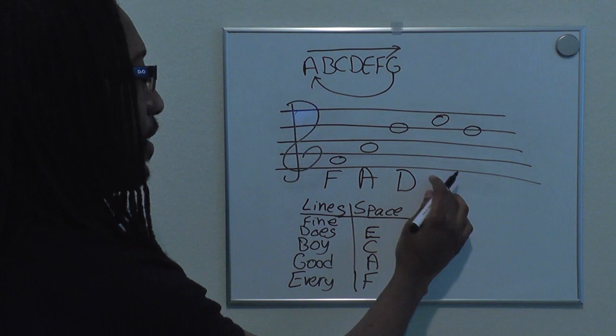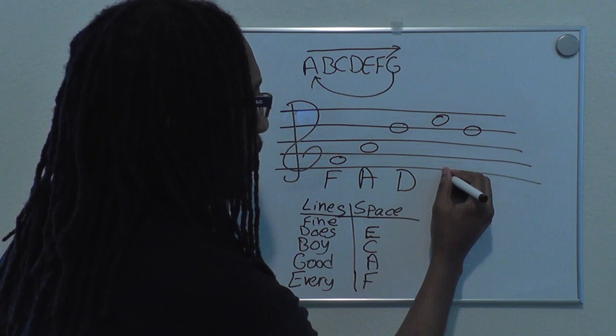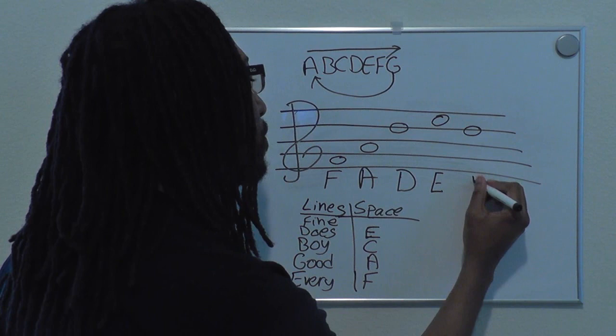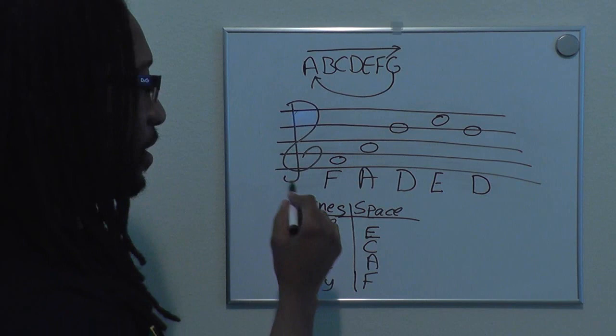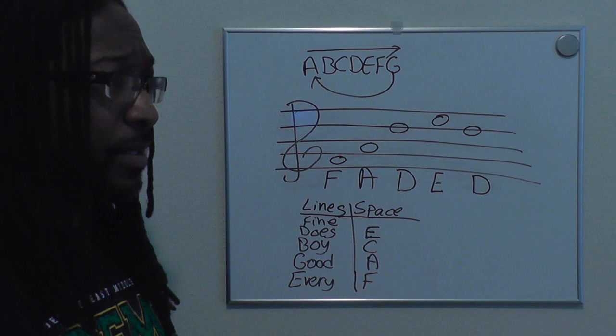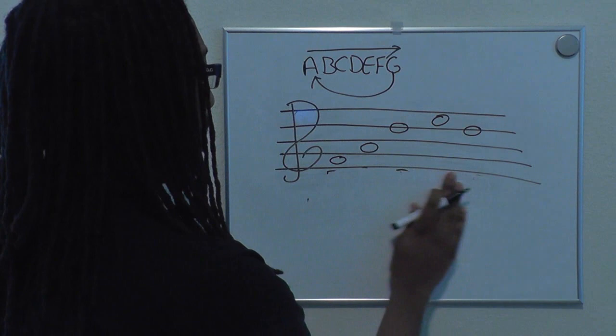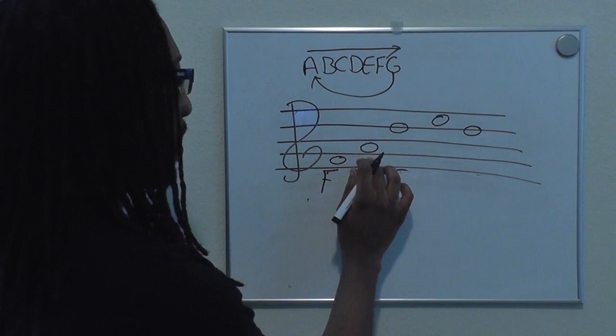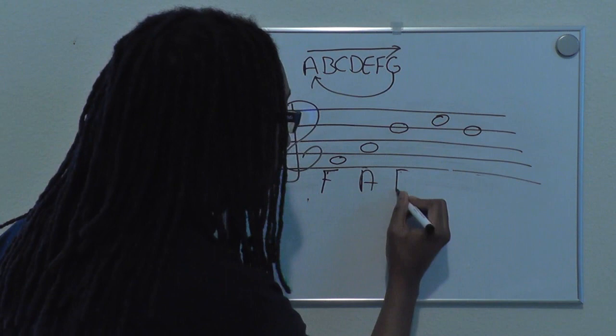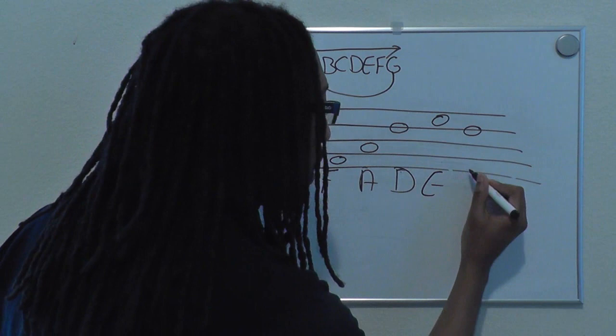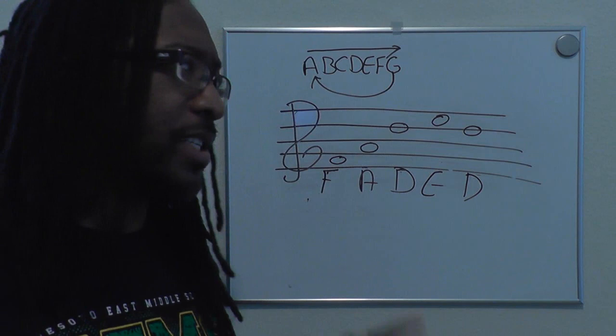The fourth note is on space four, which is the letter E. And this last one is again on line four, which would be D. So we have the word FADED. If you didn't have it all written out, you'd just work through it: space — F; space — F, A; line — Every Good Boy Does Fine; space — F, A, C, E; line — Every Good Boy Does Fine. That's how you figure out the lines and spaces.